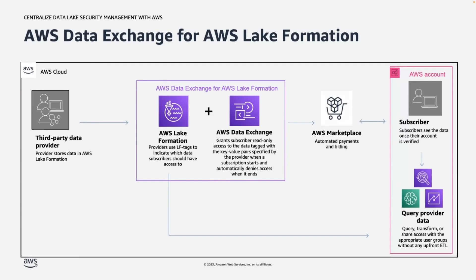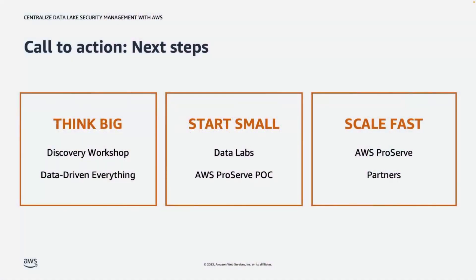With all these capabilities, you can centrally manage permissions to your data lake or data mesh — whether the data is in your S3-based data lake, in Redshift data shares, or catalogued via a Hive Metastore. You can also use the same mechanism to secure both your first-party and third-party data, which surely makes data lake security management a lot easier. That covers the important features I wanted to discuss today. Let's quickly look at how you can get started — thinking big, starting small, and scaling fast.